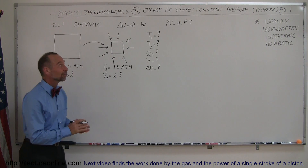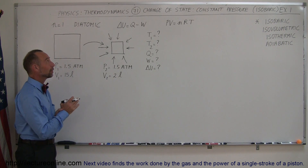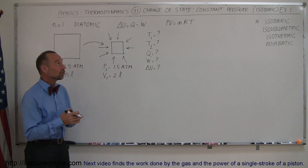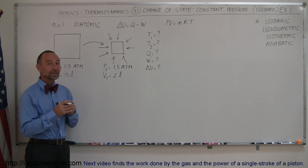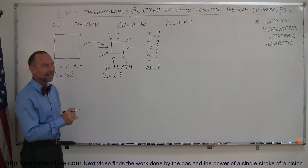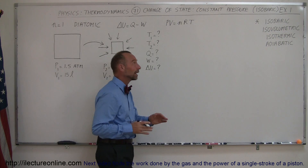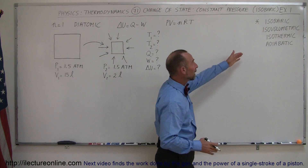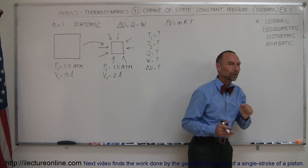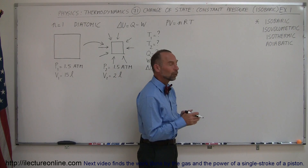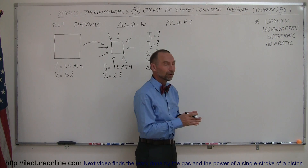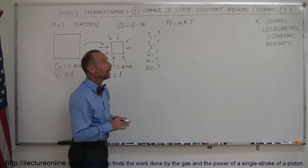Welcome to iLectroOnline. Here's our first example of how to solve a change of state problem when the pressure stays constant. We call it an isobaric process. We have four different kinds of processes we're going to look into, and we're starting with the first one called isobaric, where the pressure stays the same.